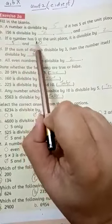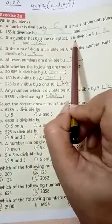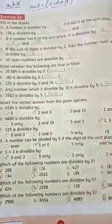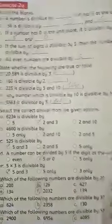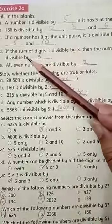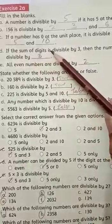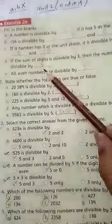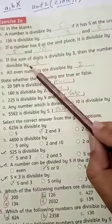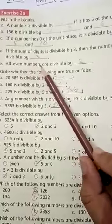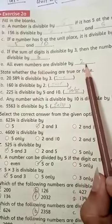If a number has 0 at the unit place value, it is divisible by 2, 5 and 10. If the sum of digits is divisible by 3, then the number itself is divisible by 3. All even numbers are divisible by 2.